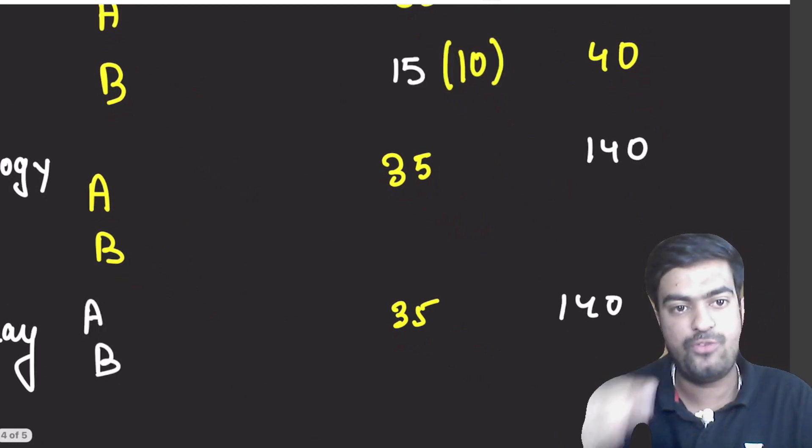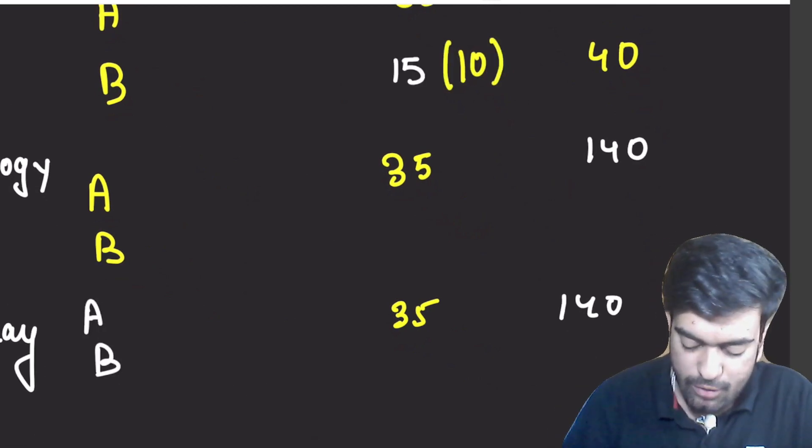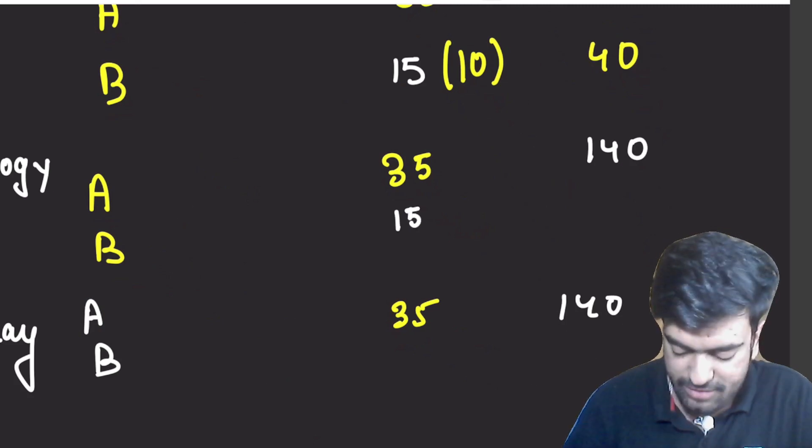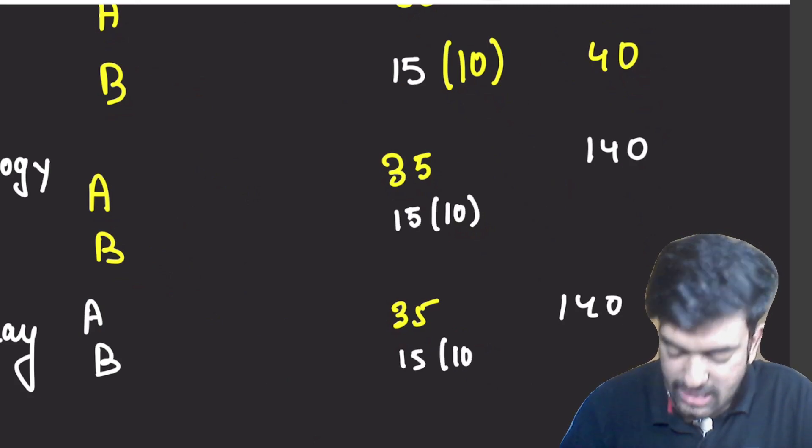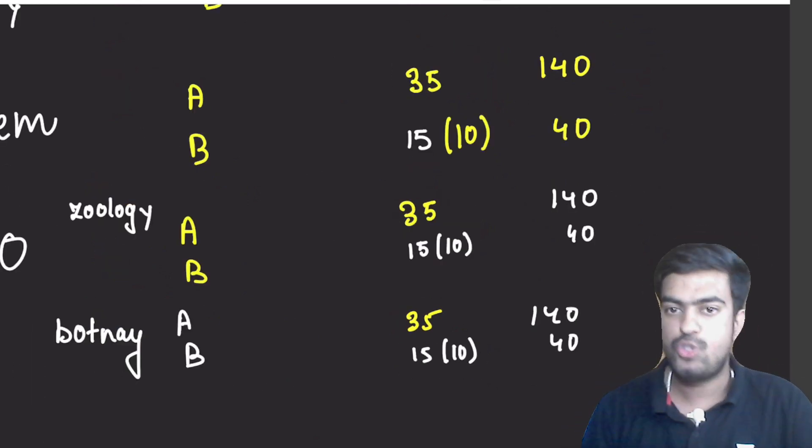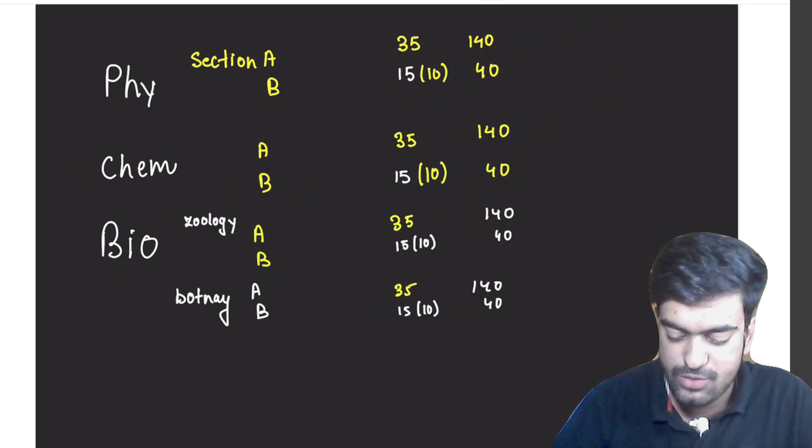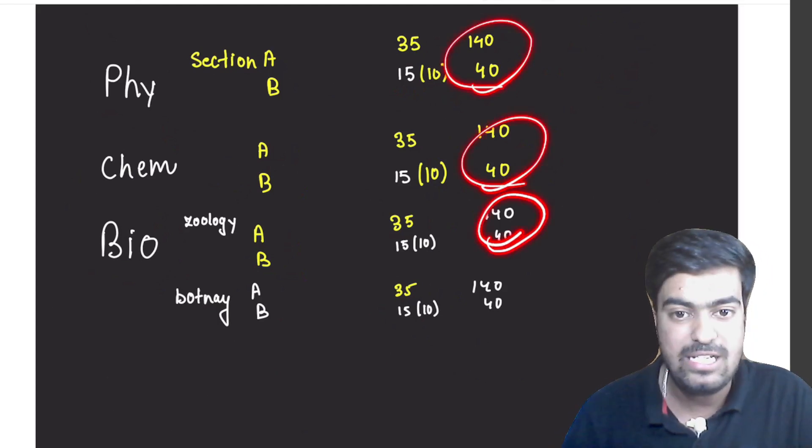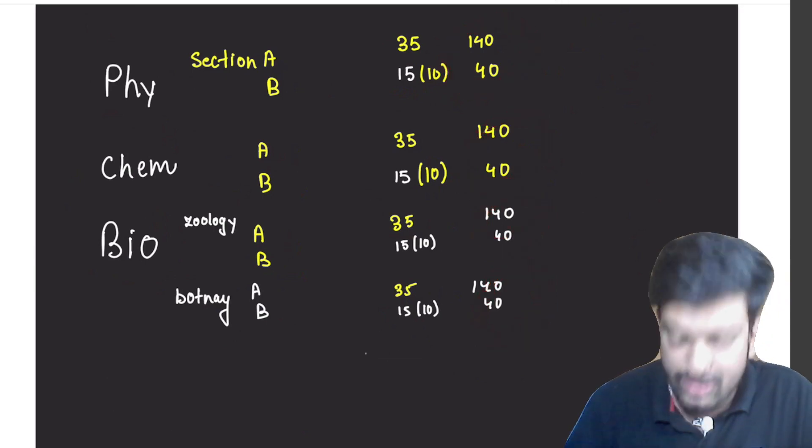And then for each Section B of Zoology and Botany, we will be giving 15 questions and 15 questions, and you can attempt any 10 of them. So this will make 40 and this will make 40. So here we have this question set. We have 180, 180, 180, 180, which is going to make 720. This is how your paper is going to come.